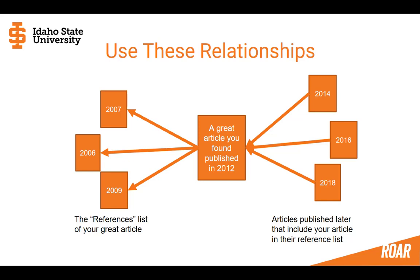Say you find a great article on your topic, but it's a little too old — it was published in 2012. If you look at the references list of that article, things will be even older. You're going to see 2006, 2007, so those aren't much help. But what if there was a way to take your great article published in 2012 and look forward in time to find later articles that cite your article in their references list? That would be super helpful, and believe it or not, there's a way to do that.